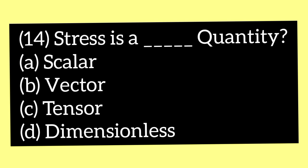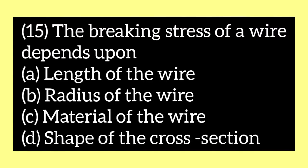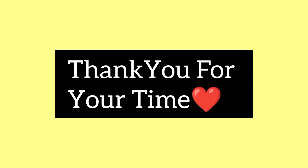Moving on to the next question: stress is a — option A scalar, option B vector, option C tensor, and option D dimensionless quantity. The answer is option A, scalar — stress is a scalar quantity. Coming to the next question: the breaking stress of a wire depends upon — option A length of the wire, option B radius of the wire, option C material of the wire, and option D shape of the cross section. The answer is option C, material of the wire.